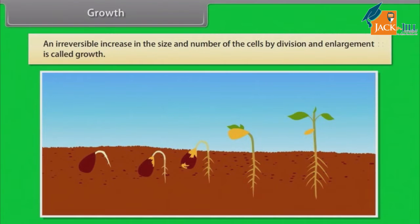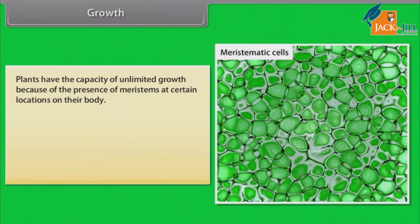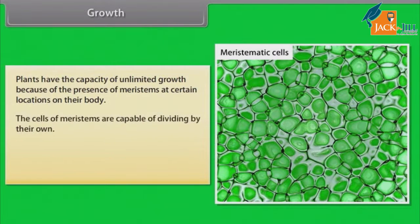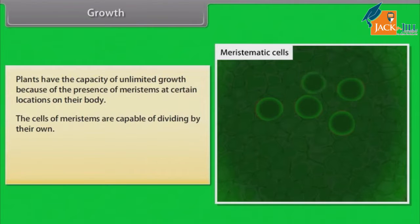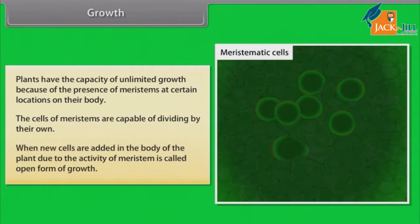Growth: An irreversible increase in the size and number of the cells by division and enlargement is called growth. In plants, the growth generally is indeterminate. Plants have the capacity of unlimited growth because of the presence of meristems at certain locations on their body. The cells of meristems are capable of dividing on their own. When new cells are added in the body of the plant due to the activity of meristem, it is called open form of growth.